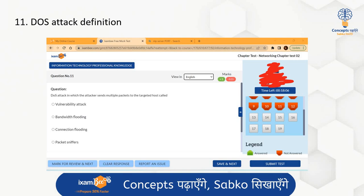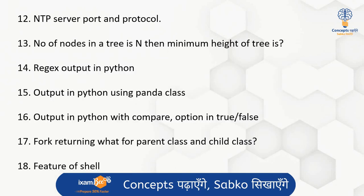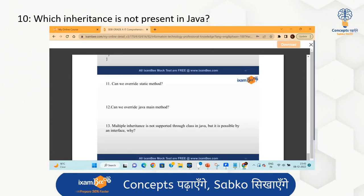The twelfth question was about the NTP server port and protocol. Then there was a question: if there are N nodes, what is the minimum height? Then questions on login order, regular expressions, pandas libraries and classes, Python output with comparison returning true or false, the fork system call returning to parent and child class in programming, and features of shell.